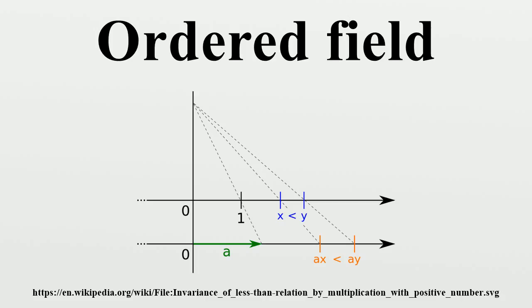Transitivity of inequality: If A less than B and B less than C, then A less than C.